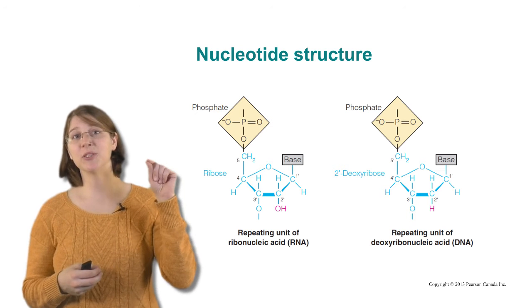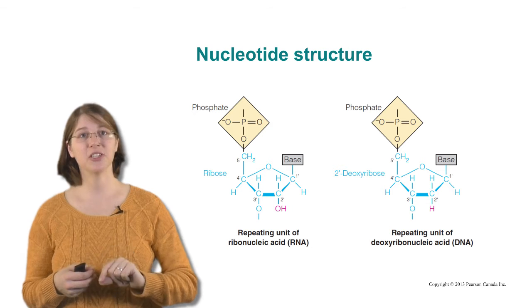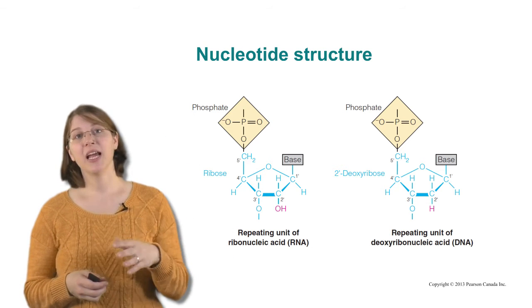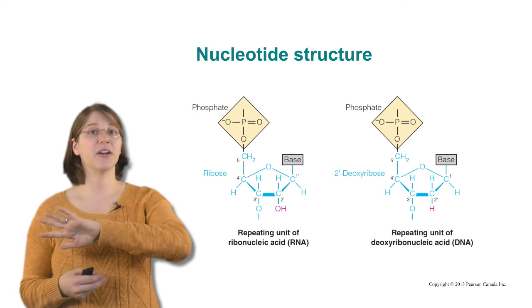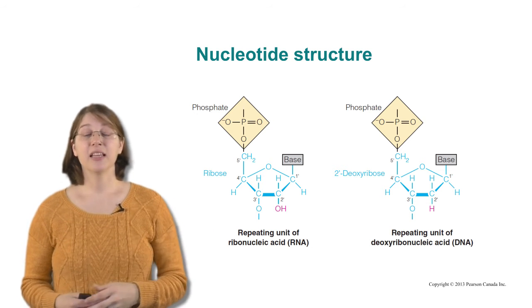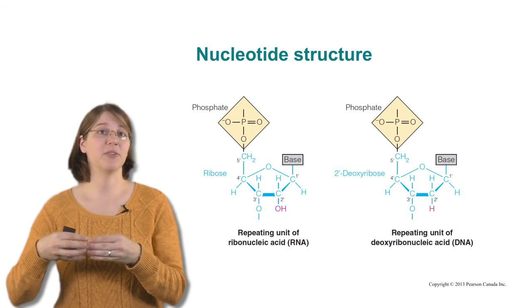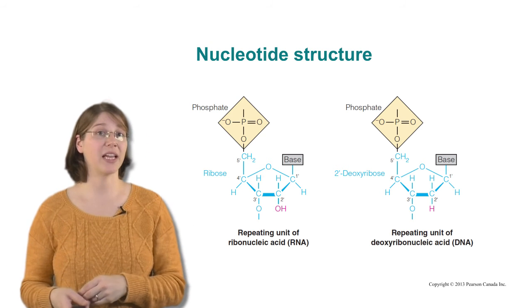And so, in nucleic acid polymers, we'll have a phosphate and then a sugar, and then a phosphate and then a sugar as our backbone. And then the bases will decorate the outside of our nucleic acid. That allows for the bases to come together and form the Watson and Crick base pair throughout the nucleic acid.